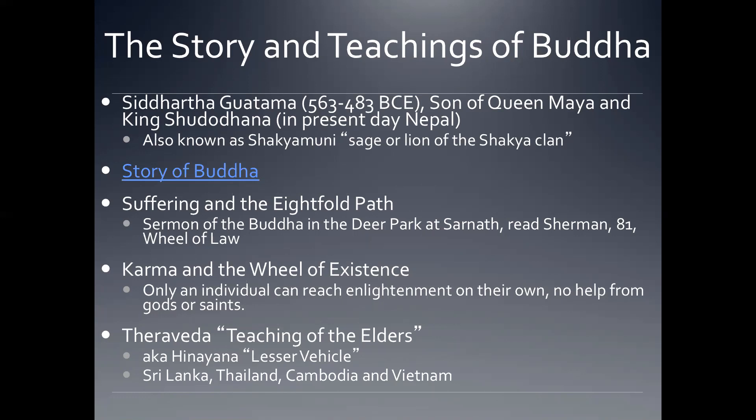So, suffering and the Eightfold Path. Let me first summarize the story of the Buddha so you can orient yourself. Buddha grew up as a prince, and his parents had the idea that they would insulate him from all the bad things in the world. They decided when he was born that he would never see anyone unhealthy, anyone in poverty, or anyone old. Everything surrounding him would be beautiful, young, and healthy.